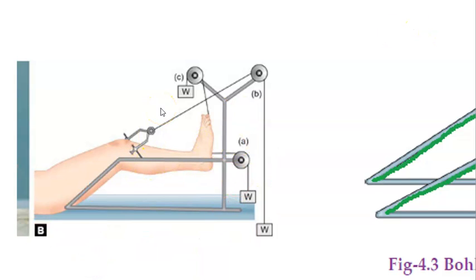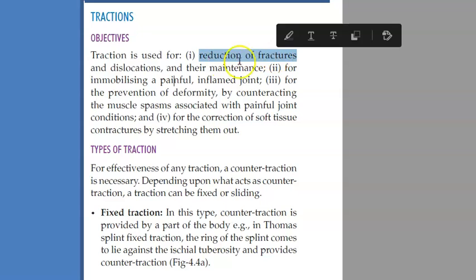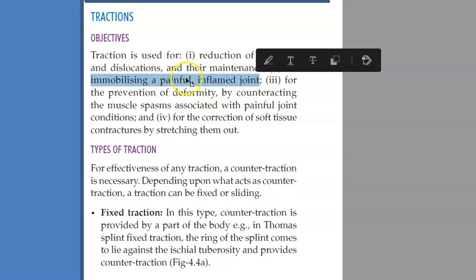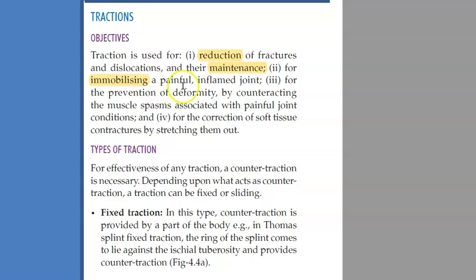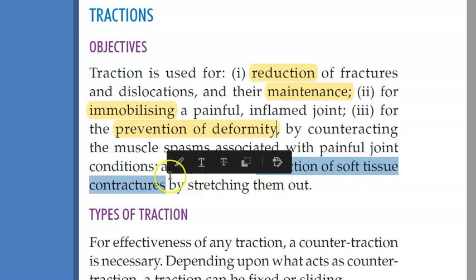After reduction of a fracture, they talk about traction. What is the objective of traction? First, it is used for reduction of fracture and dislocation and their maintenance — you have reduced the fracture and you want to maintain it. And for immobilizing a painful inflamed joint. So you are maintaining the reduction, immobilizing the joint, and for prevention of deformity — you can also prevent deformity by pulling it the right amount. Then you will correct soft tissue contractures by stretching them out.